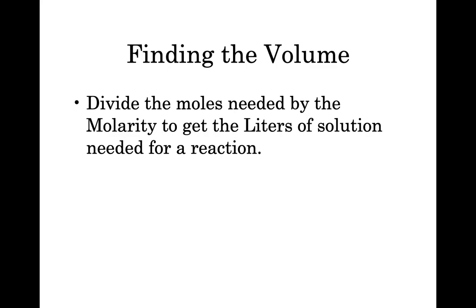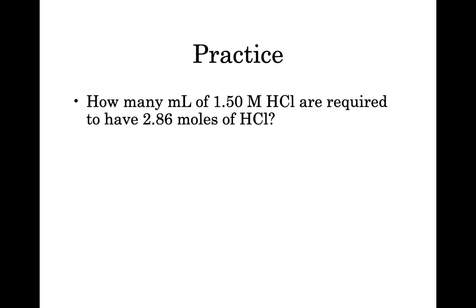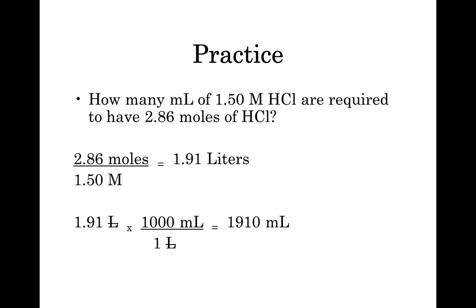For finding volume, divide moles by molarity to get liters. For example: how many milliliters of 1.5 molar HCl would be required to have 2.86 moles of HCl? 2.86 moles ÷ 1.50 M = 1.91 liters. The question asks for milliliters, so 1.91 L × 1,000 mL/L = 1,910 milliliters. And that's how we do the problems for today on molarity.